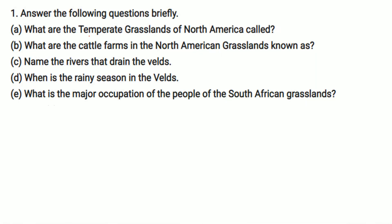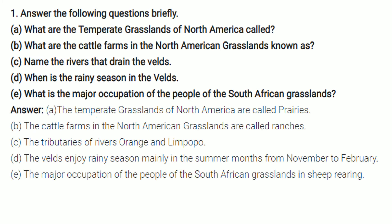What are the temperate grasslands of North America called? The temperate grasslands of North America are called prairies. What are the cattle farms in the North American grasslands known as? They are known as ranches.